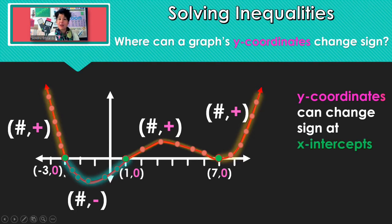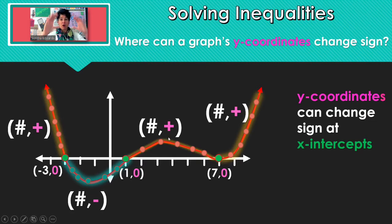It doesn't mean it has to. At our first two x-intercepts, the y part of the point changed sign. But at our third x-intercept, the y part of our coordinate was positive and afterwards positive. But x-intercepts are a great place to look for where a y-coordinate can change sign.